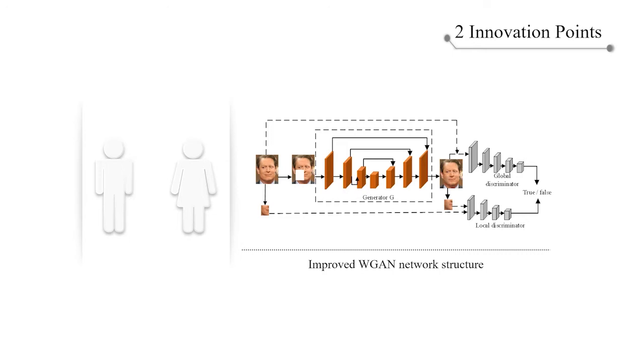The other part is composed of two discriminator models D, which are used to judge whether the image is a real picture or a generated picture. The discriminator is composed of a global discriminator and a local discriminator.